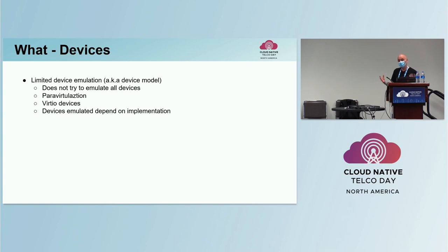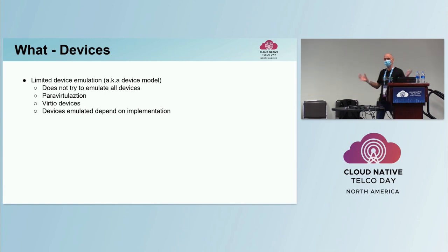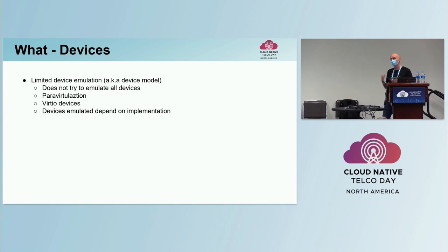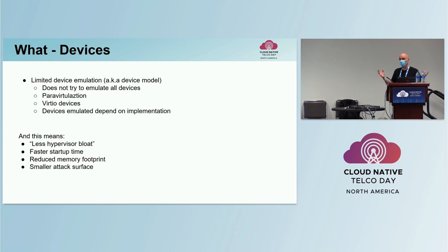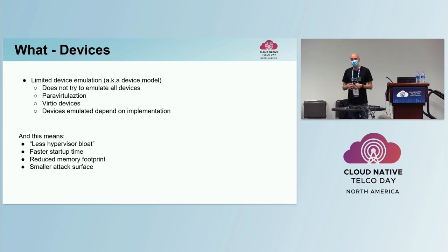Moving on to the devices — what does this virtualization support? It's limited. That's where the micro aspect comes into it. It supports a limited set of devices or a limited device model. It doesn't try to emulate all of the things and be a general virtualization solution — it's not that. It uses para-virtualization, so the guests are aware that they're running within a virtual environment. Depending on your implementation, there may be varying levels of device types. But what this all means is there is less bloat — less hypervisor bloat, as it's commonly termed — and it has a faster startup time and less attack surface.